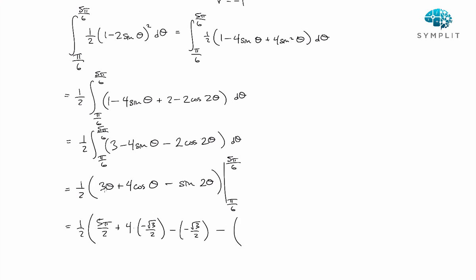And then minus, plugging in pi over 6, we get 3 times that, that's pi over 2. And then plus 4 times, cosine of pi over 6 is square root of 3 over 2. And then minus, sine of 2 pi over 6, that's pi over 3. Sine of pi over 3 is square root of 3 over 2.